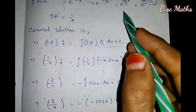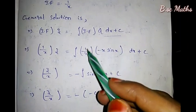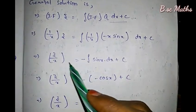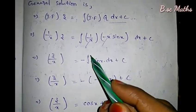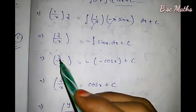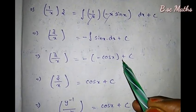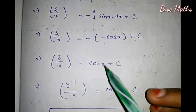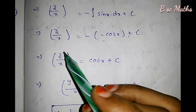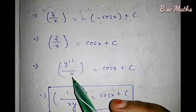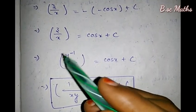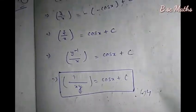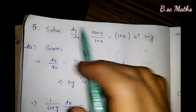Using integrating factor 1/x: z times 1/x equals integral of 1/x times minus x·sin(x) dx plus c. So z/x equals integral of minus sin(x) dx plus c. Integral of sin(x) dx is minus cos(x), so z/x equals minus cos(x) plus c. Therefore y inverse divided by x equals minus cos(x) plus c, and y inverse equals minus x·cos(x) plus c·x. This is our answer.